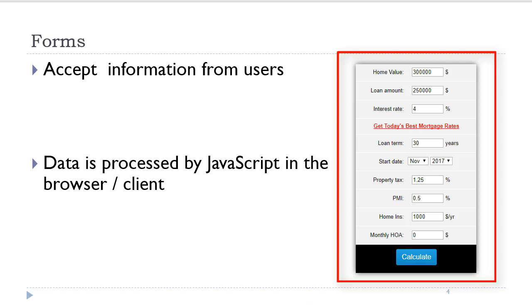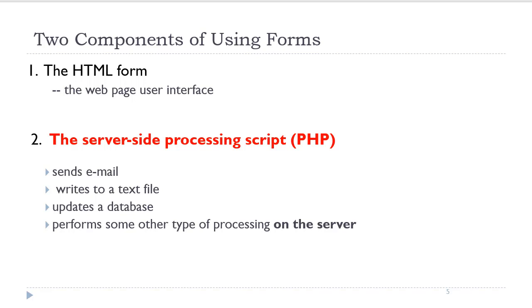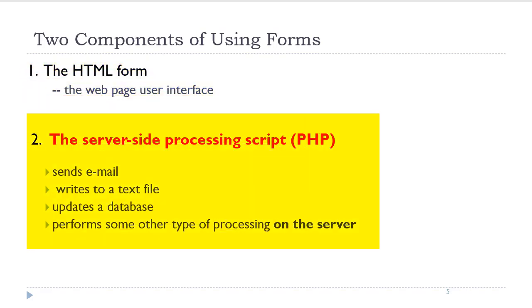It would display information to the user on the screen. There are two components of HTML forms: the actual form itself and the server-sided processing script. In order to obtain information from the form, it needs to be processed with a script. Typically, the script will send out an email confirmation to the person who filled out the form. It could also write information to a text file, update a database, or perform some other type of processing on the server.